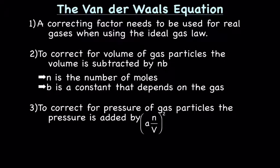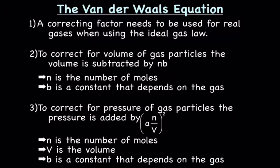To correct for pressure of gas particles, the pressure is added by a times (n/V)², where n is the number of moles, V is the volume, and a is a constant that depends on the gas. To use a(n/V)², you need to look up a on a table.